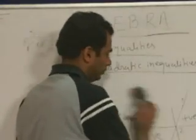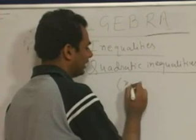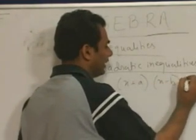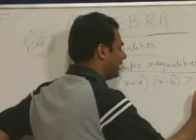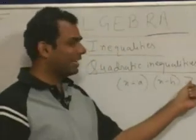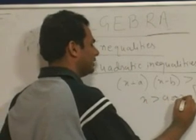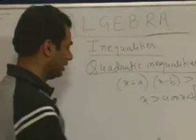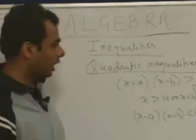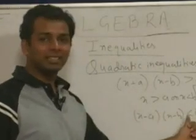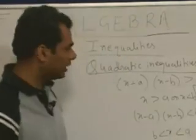For any quadratic expression of the form (x − a)(x − b) > 0, where a is greater than b: whenever there is a greater-than sign, straight away write that the value of x is always greater than a or the value of x is less than b. And in the case of (x − a)(x − b) < 0, whenever it is a less-than sign the value of x will always lie between b and a, since a is greater than b.